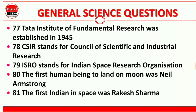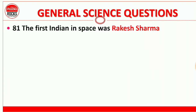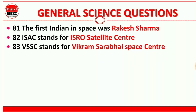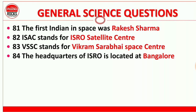Question 81: The first Indian in space was Rakesh Sharma — yeh bahut important question hai. Question 82: ISAC means ISRO Satellite Center, located at Bangalore. Question 83: VSSC stands for Vikram Sarabhai Space Center. Question 84: The headquarter of ISRO is located at Bangalore — ISRO ka headquarters Bangalore mein hai.